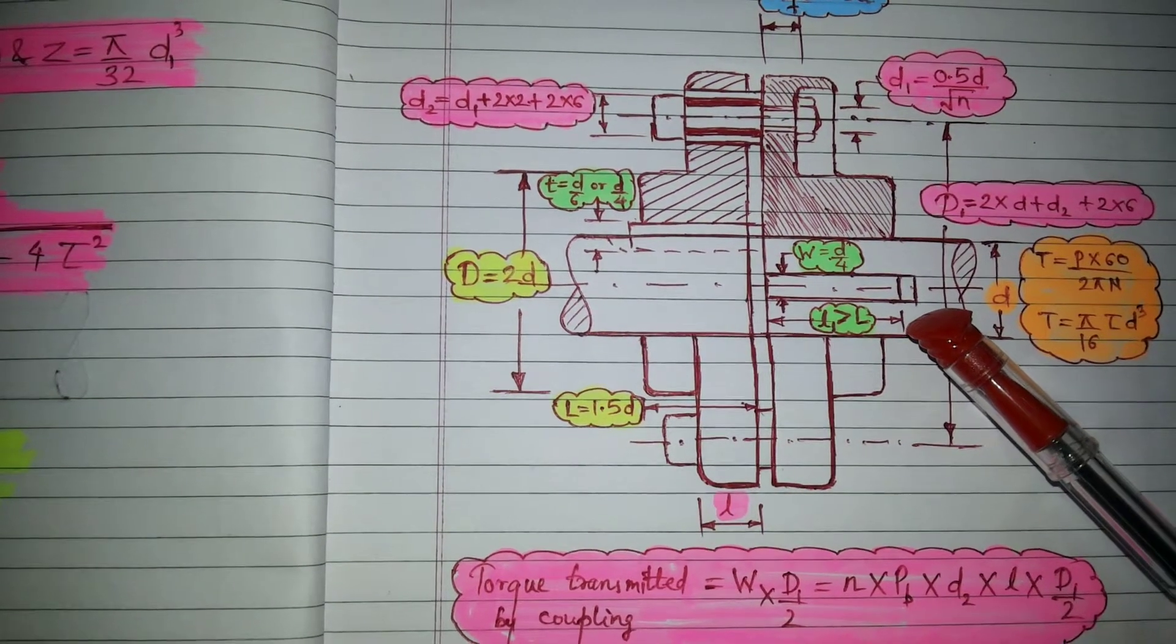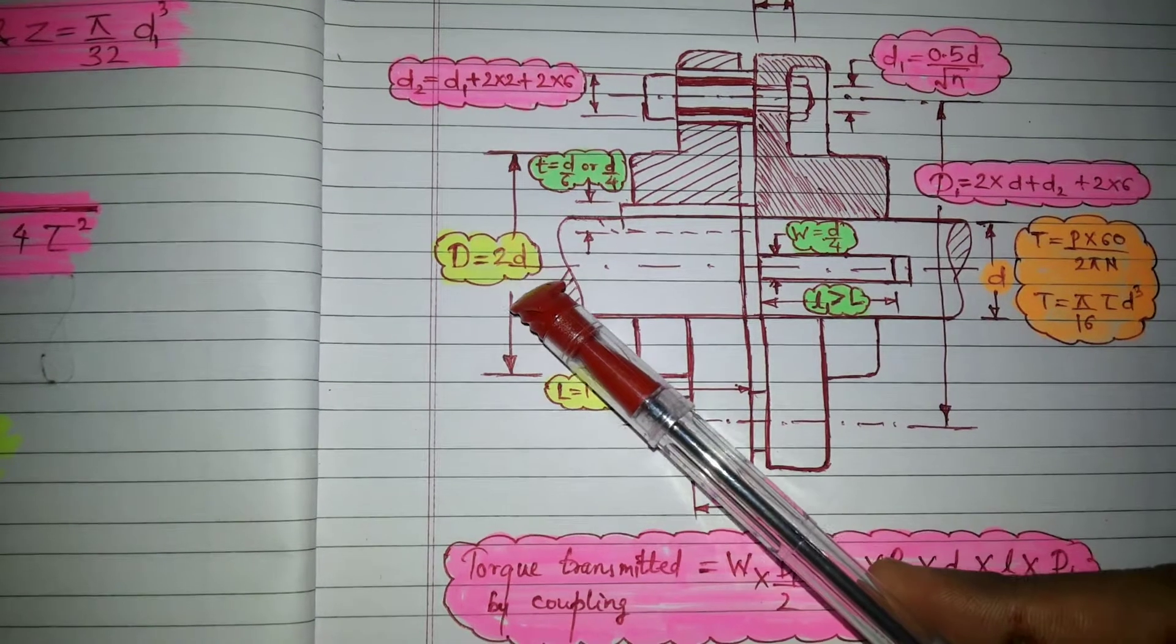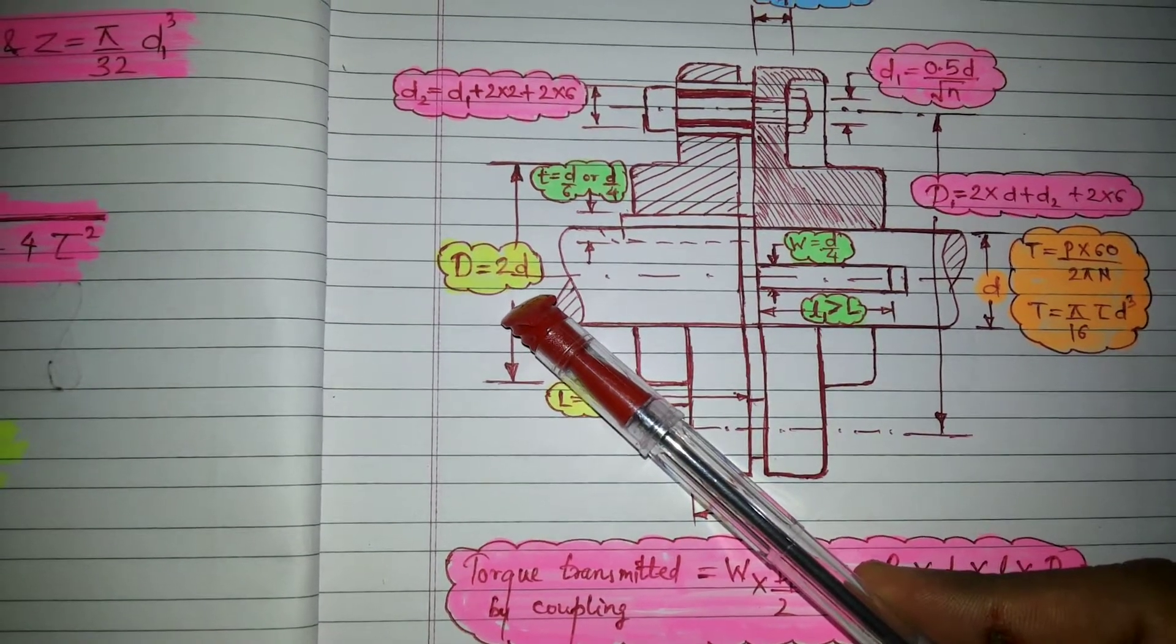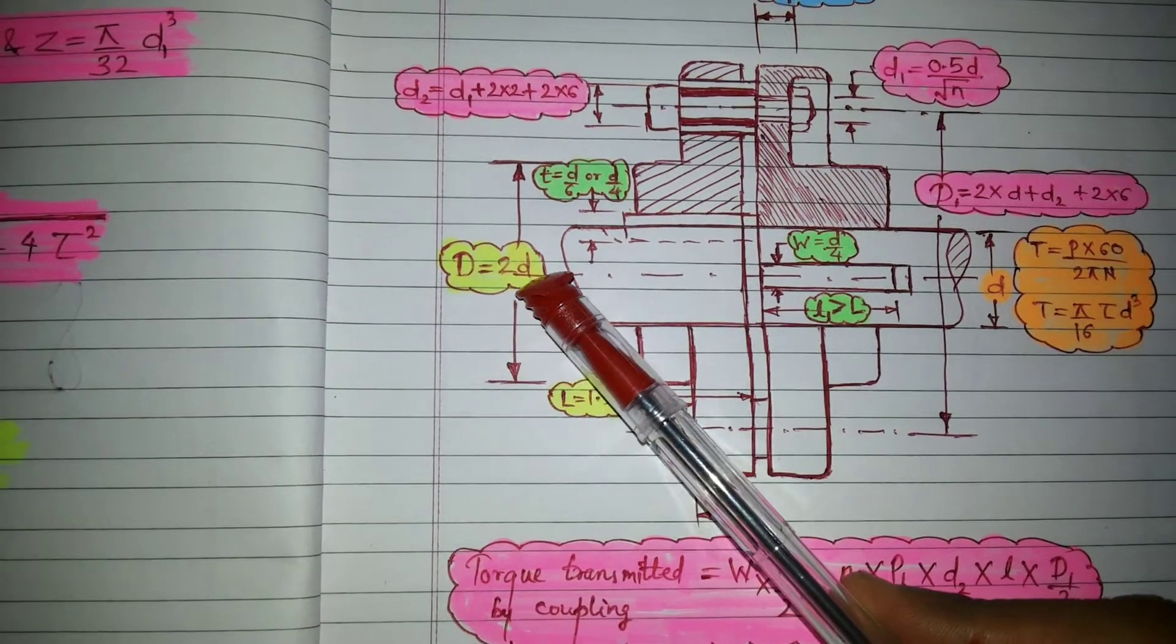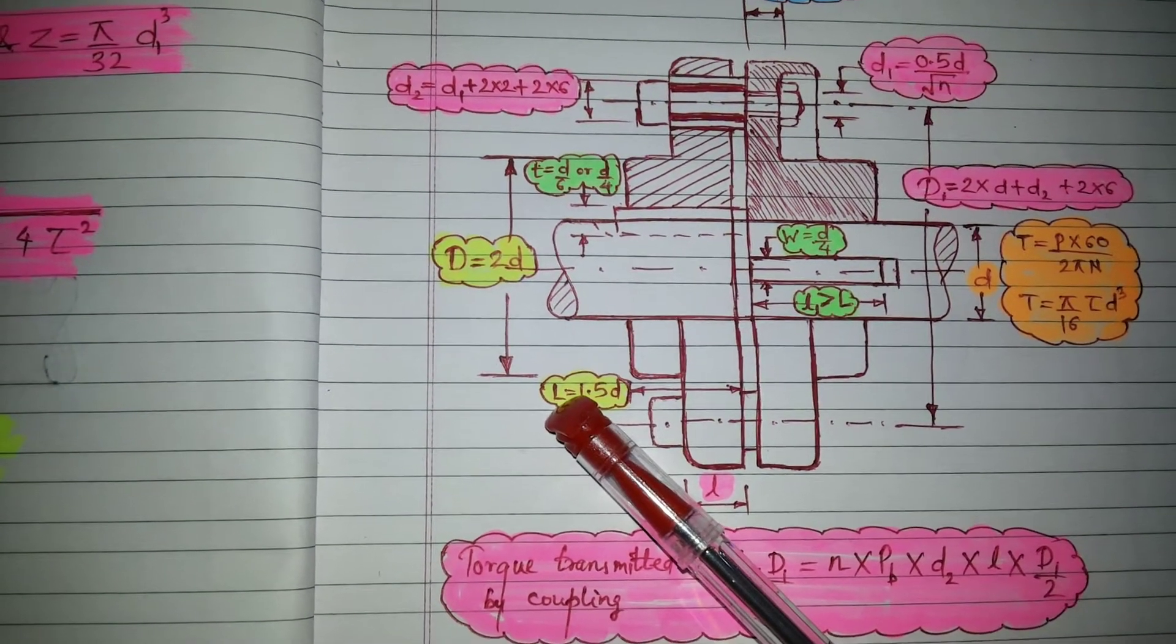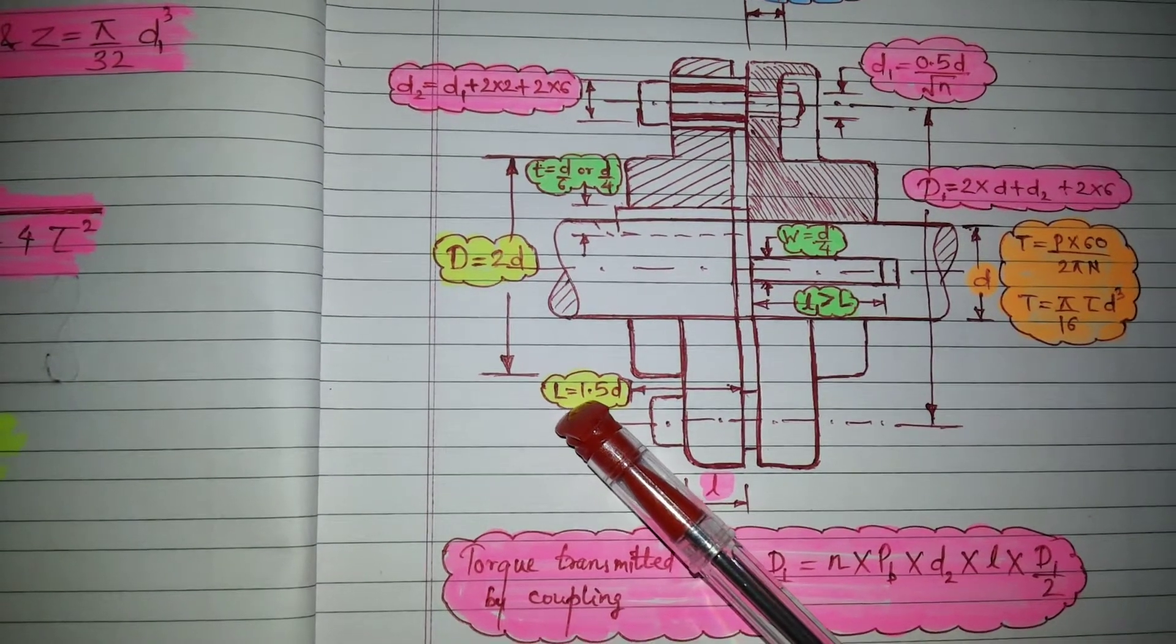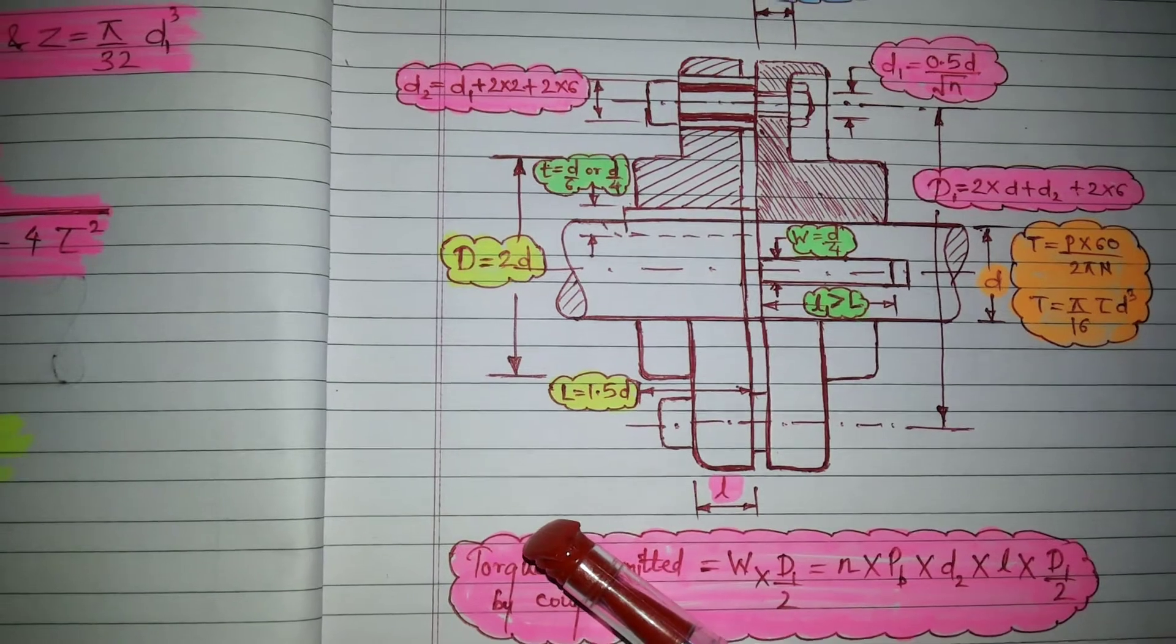Now, step number three, related to hub. So as we already have small d, so now capital D is equal to 2D and capital L which is related to hub will be equal to 1.5 D.